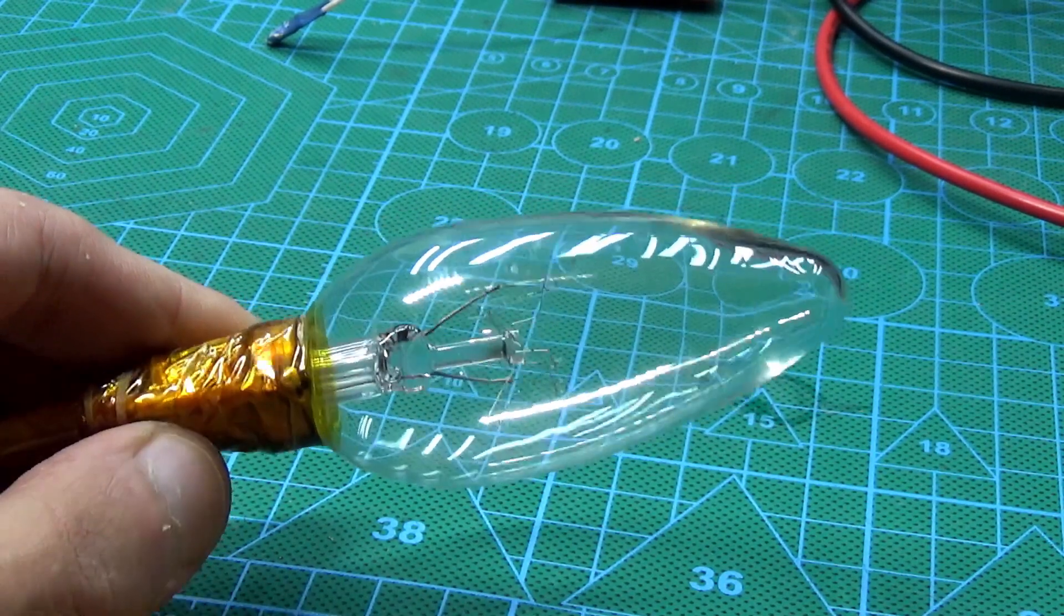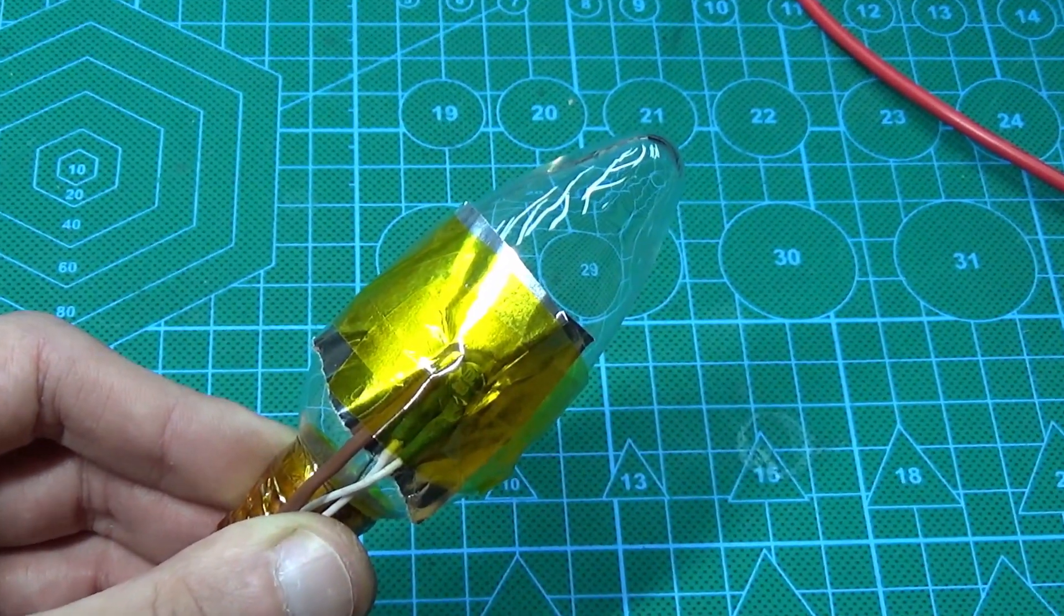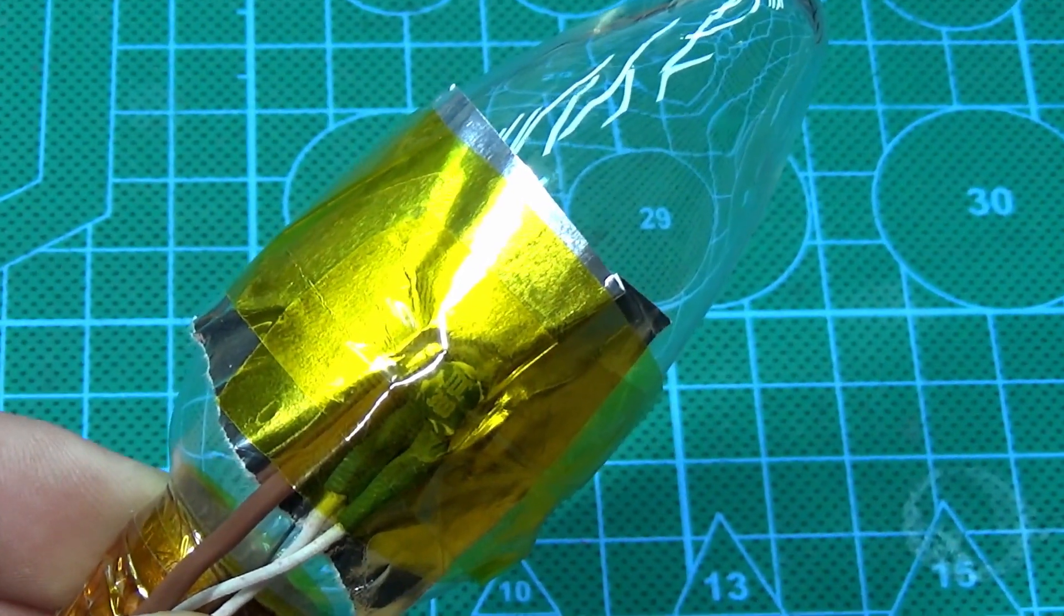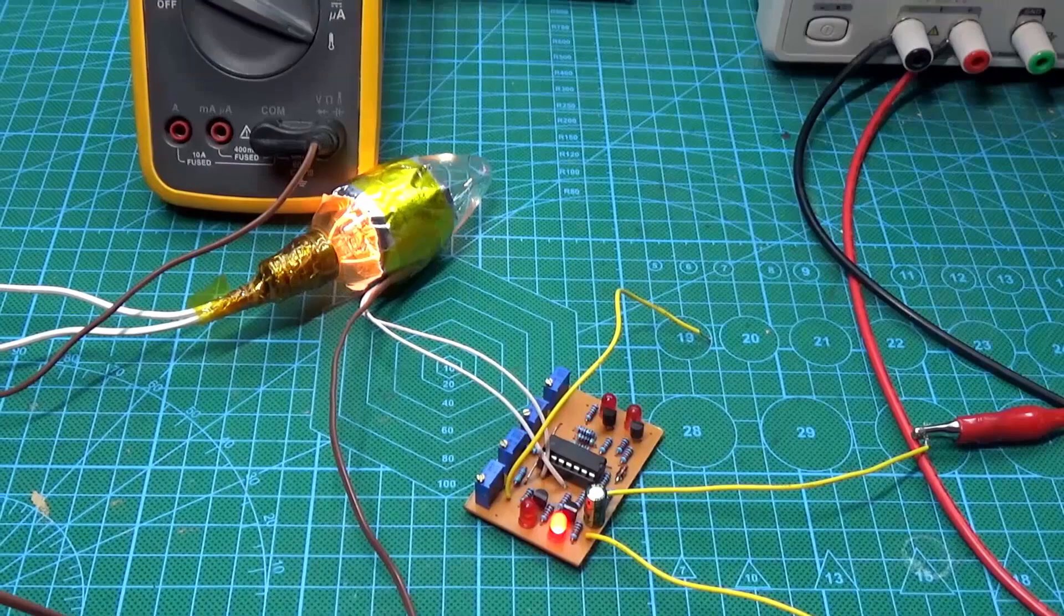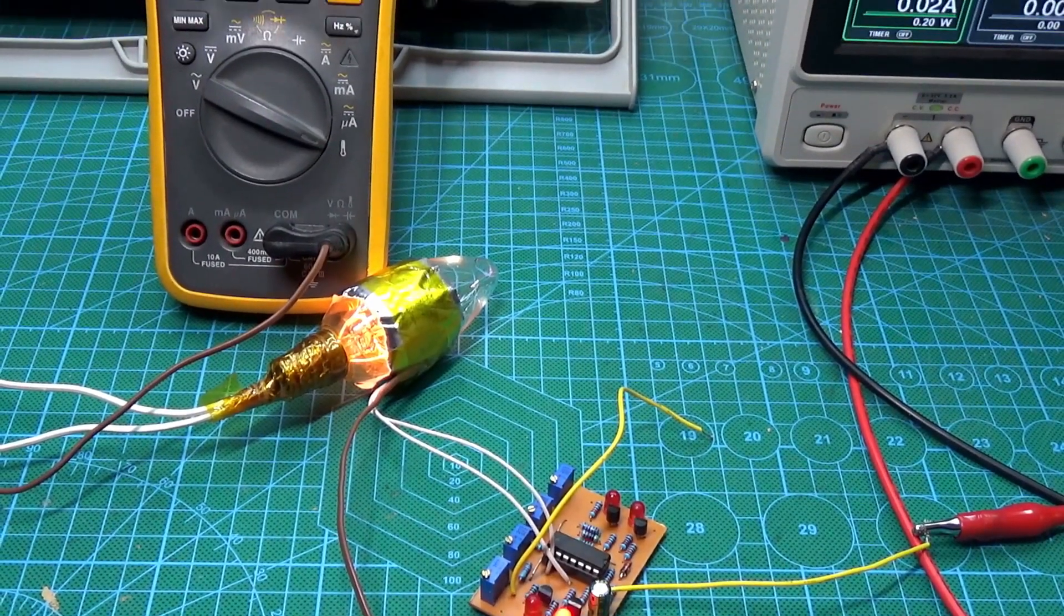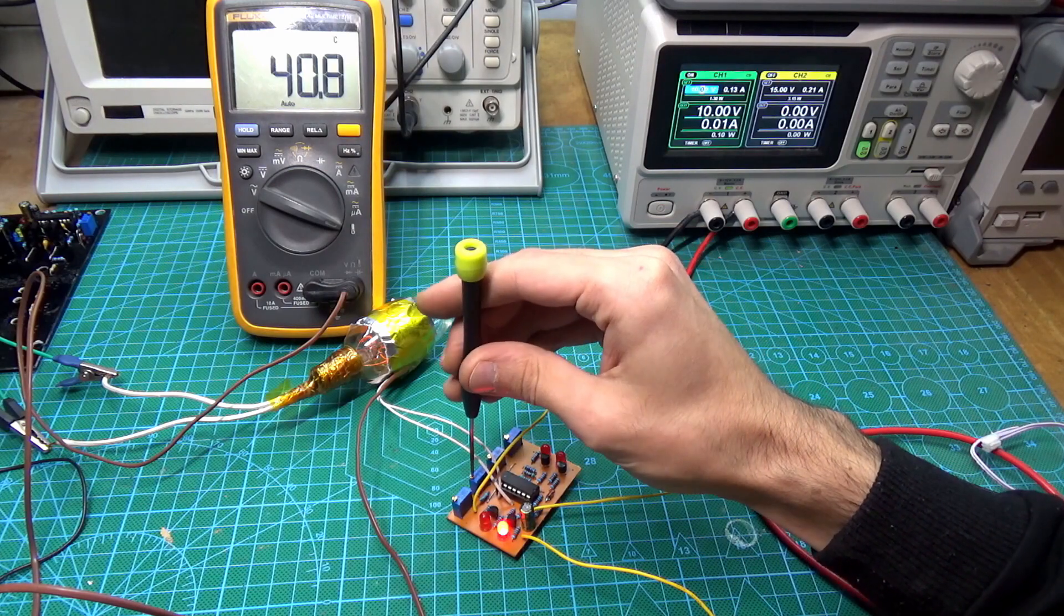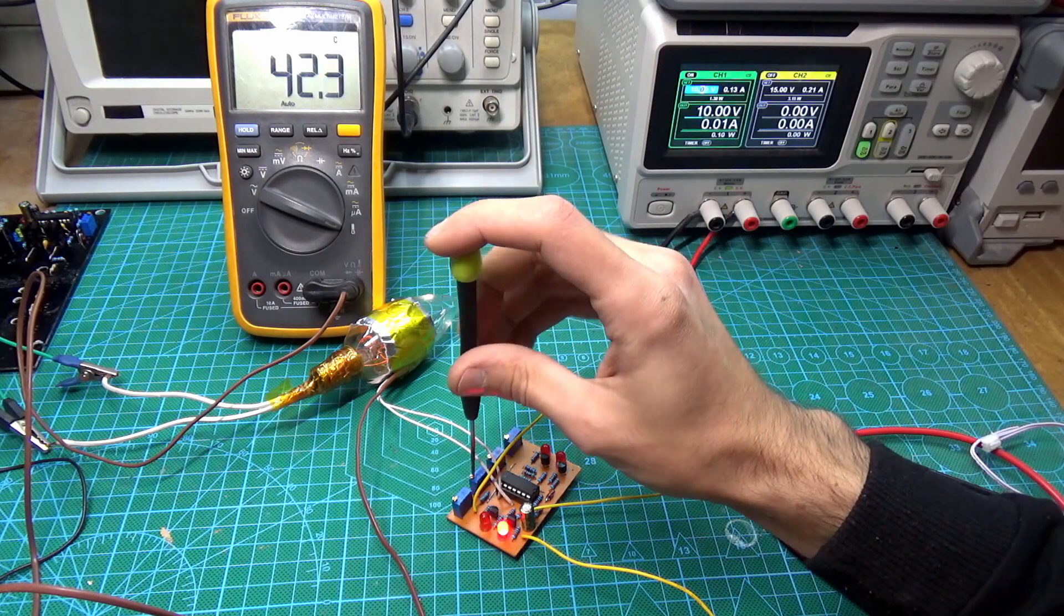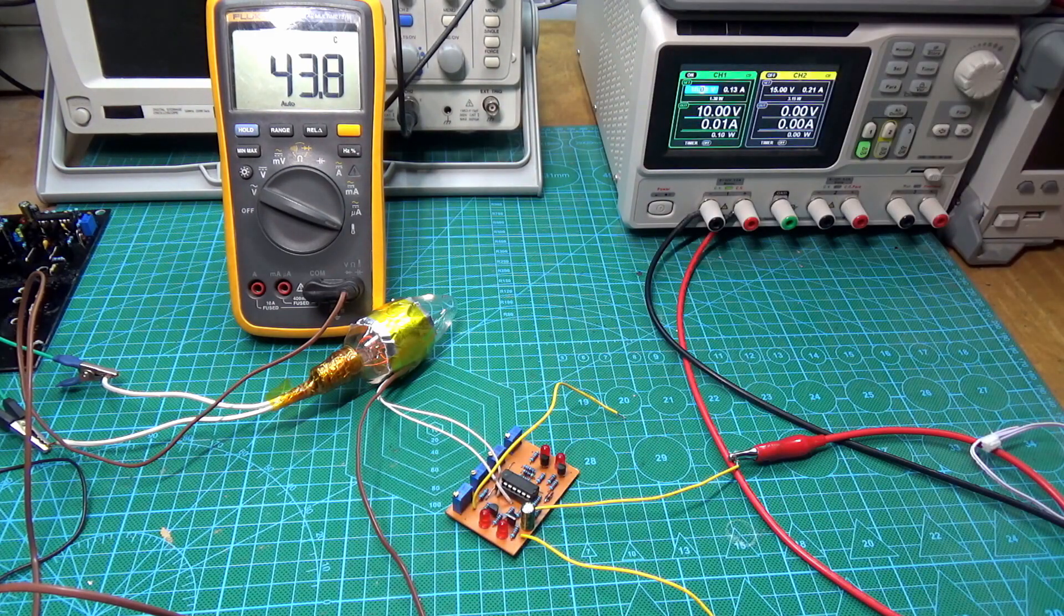I used an ordinary light bulb as a heat source, wrapped it up with aluminum foil, and fixed the thermocouple of the reference thermometer and the device thermistor with tape. They should be located as close to each other as possible to minimize temperature variation. The bulb temperature was changed by the voltage changing on it with the help of a laboratory auto transformer. The brighter bulbs light, the greater the thermal radiation.